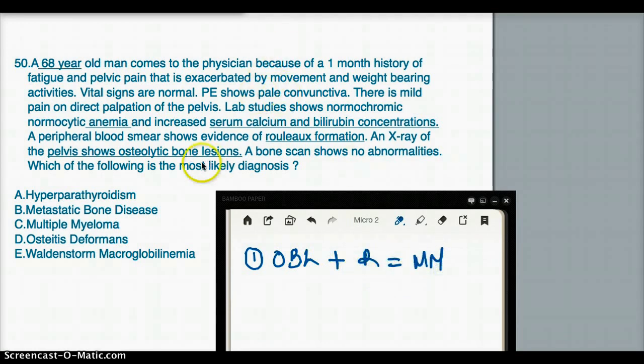And everything else kind of matches our story. He is anemic because more of his bone marrow is making plasma cells rather than making other different kinds of cells. There is increased serum calcium and bilirubin concentrations because there is more breakdown of bone in the pelvis.